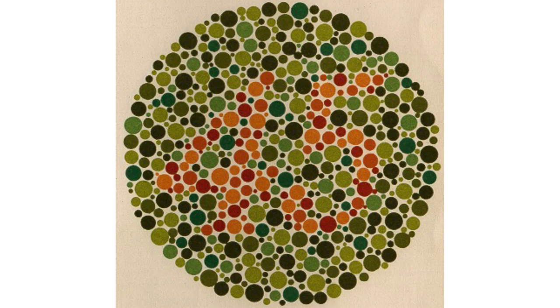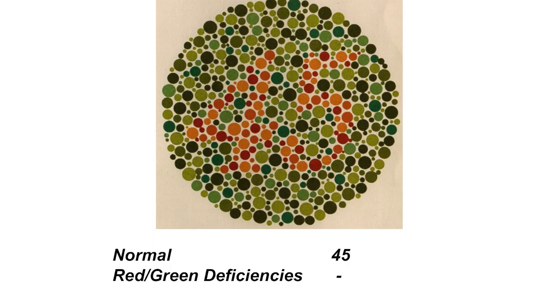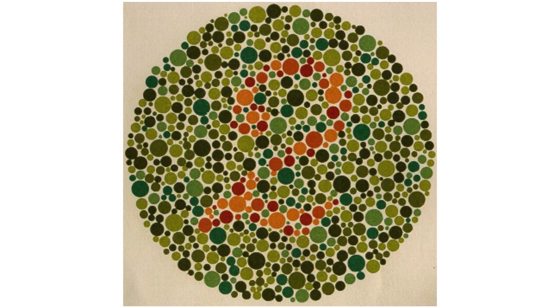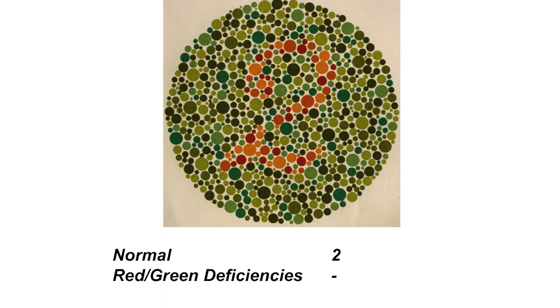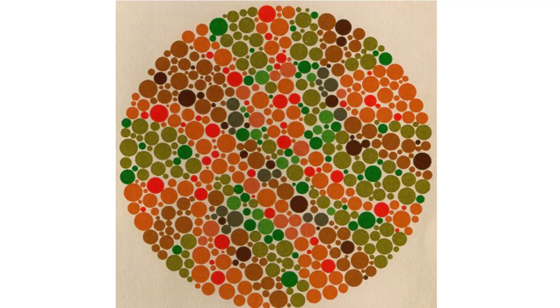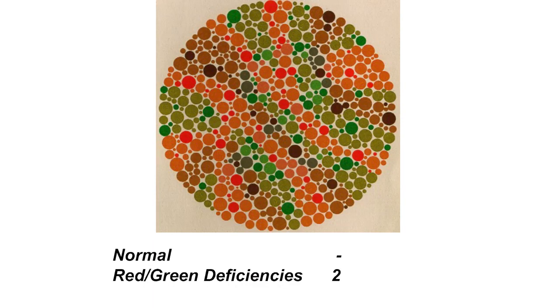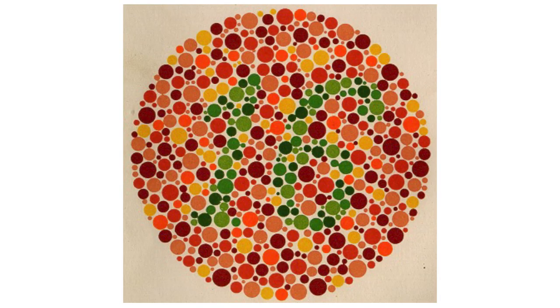I don't want you to get discouraged if you're not seeing these numbers — this is not unusual, given that 1 in 12 males are affected. The next number is 45; if you have a deficiency, you may not see a number at all. Same with the next one — it's a 2, but again, you may not see anything. Then there's a slide with no number at all. Normal vision sees nothing, but if you have a deficiency, you might see a 2 in there.